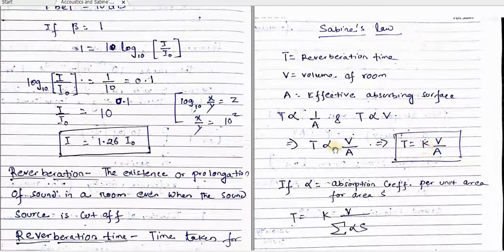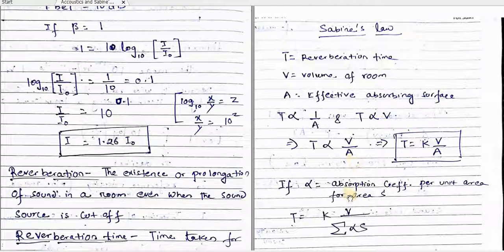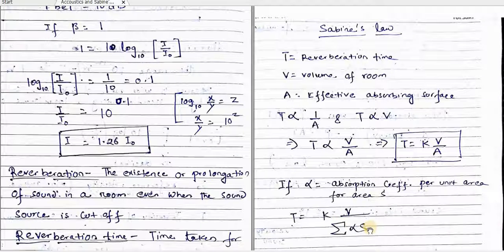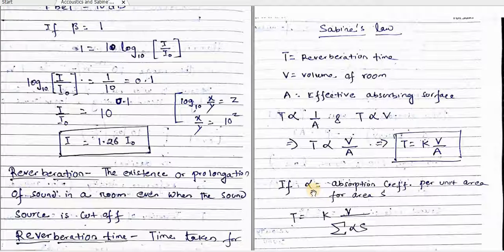To remove the proportionality sign, we introduce a constant K. So, reverberation time is equal to K times V by A. Here, A can be expressed in terms of alpha and S, where alpha is the absorption coefficient for a surface of area S. That is, A is equal to summation of alpha times S. Alpha is required because in a room there can be different materials — partitions, walls — and for different materials the absorption coefficient will be different.